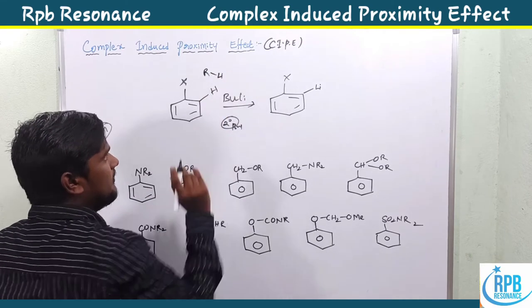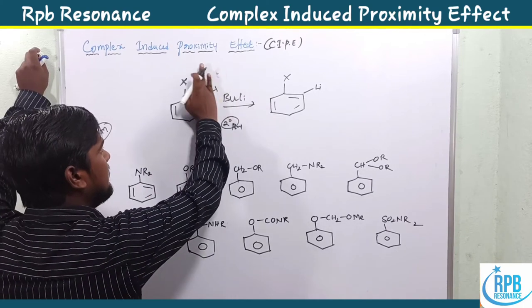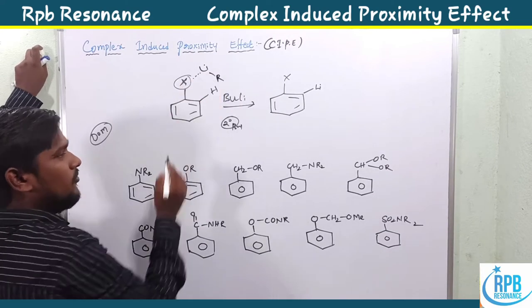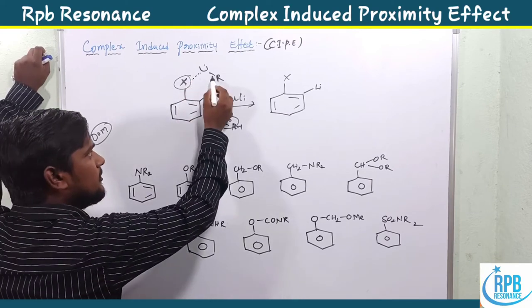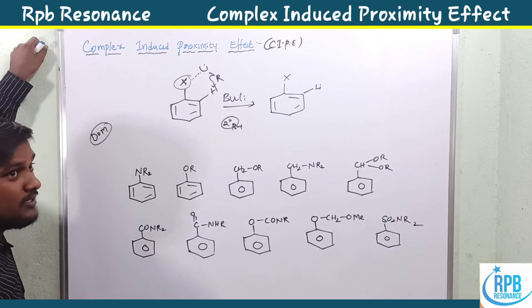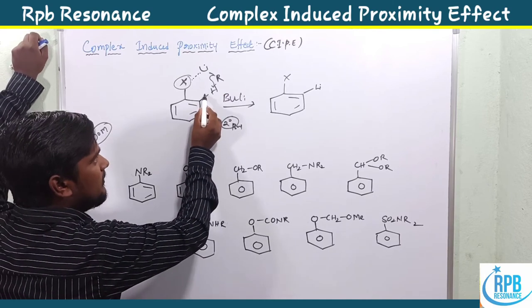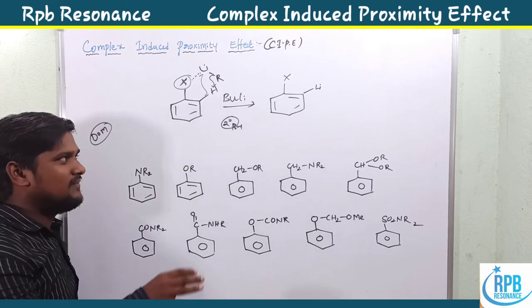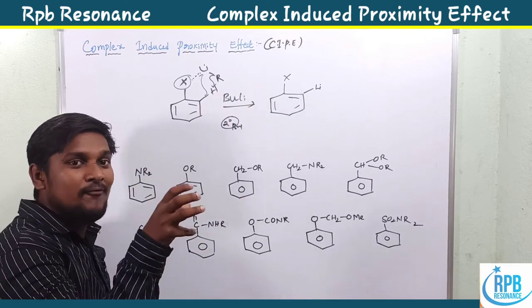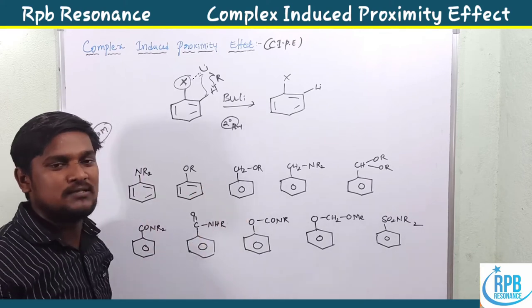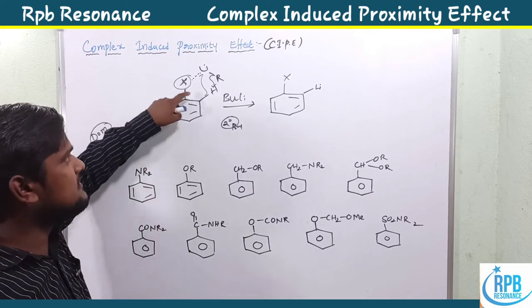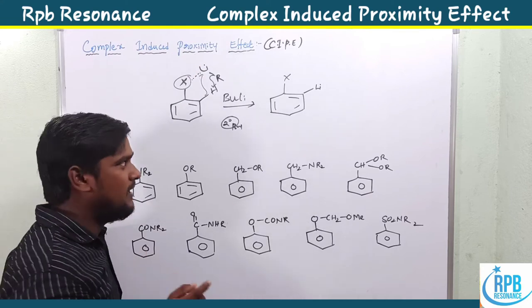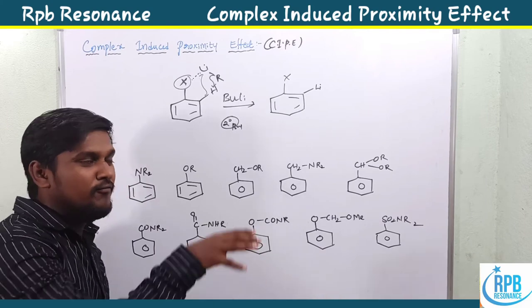Let's imagine here it is R-lithium. This X group coordinates with the lithium atom, and the bonded two electrons will abstract the proton from the ortho position. It produces the lithium there — so organolithium reagents abstract the proton from aryl compounds adjacent to some X group. This is simply known as the Complex Induced Proximity Effect.